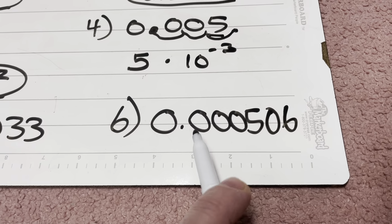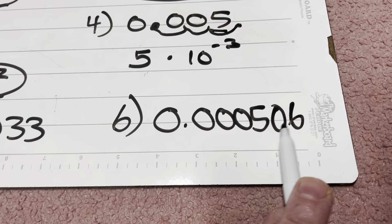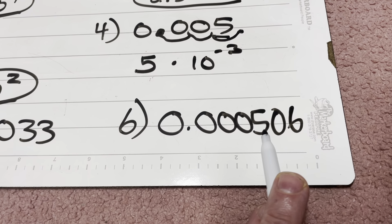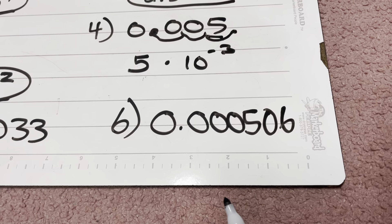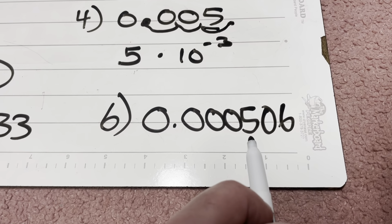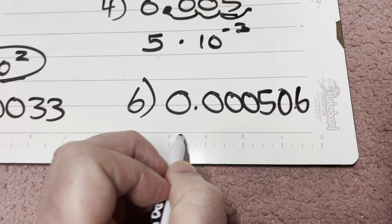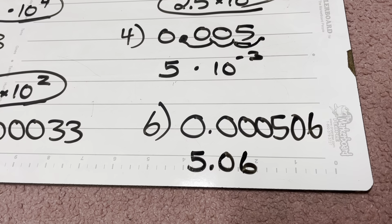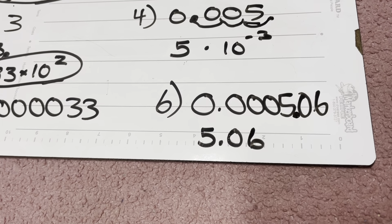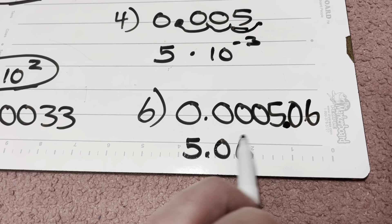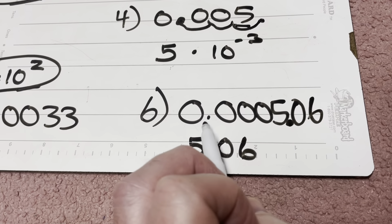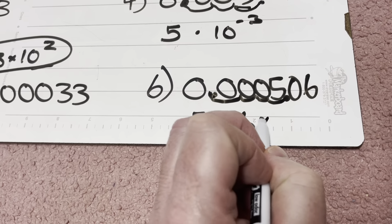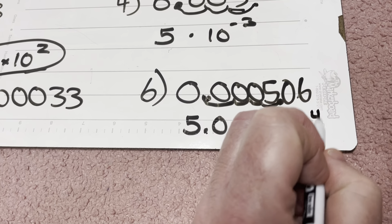Now, 506 ten-millionths — 506 millions. Once again, I need to be at least 1 but smaller than 10, so that's going to be 5.06. I put the decimal there. How many places do I have to move that to the left to get it back to its original spot? 1, 2, 3, 4 — that's going to be times 10 to the power of negative 4.